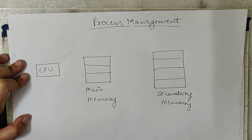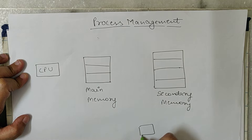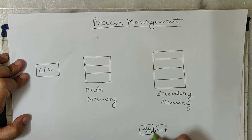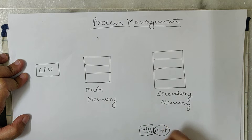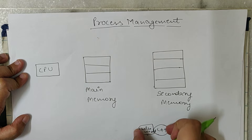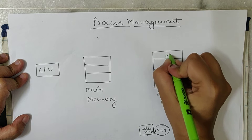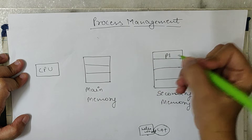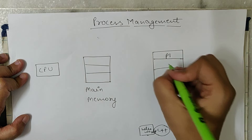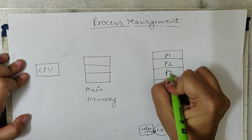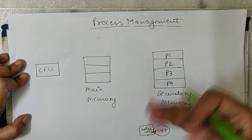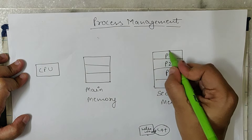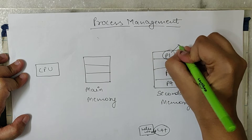If I want to write a Hello World program in C++, I write that program and save it in the secondary memory — let's say this program's name is P1. I can make other programs P2, P3, P4, and so on, and all these programs will be saved in the secondary memory. These are known as programs.